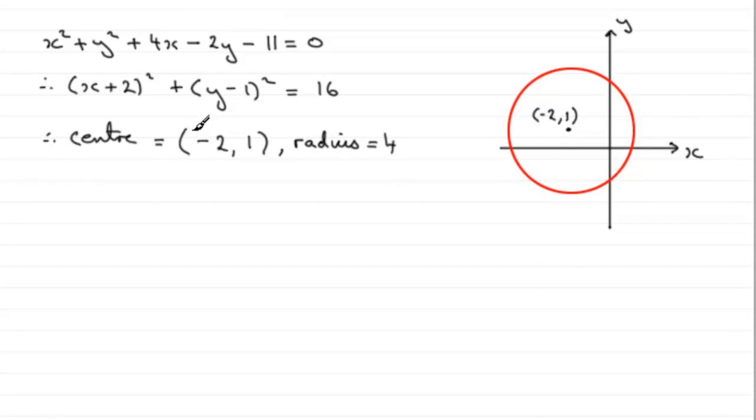We found out in the previous part that the centre was at minus 2, 1, and it had a radius of 4 units, so you're going to have something looking like this. And so I can expect a positive y-value up here and a negative value down there.